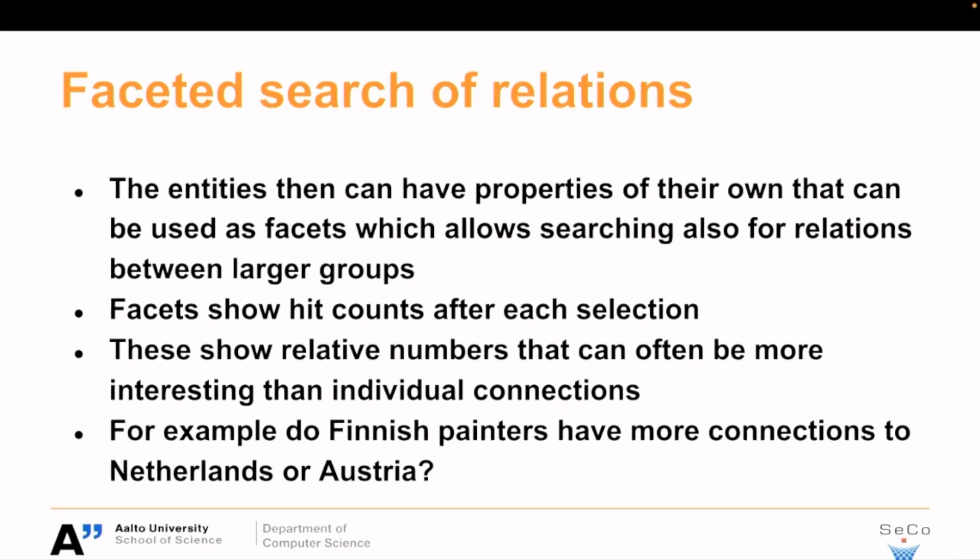Because the entities — like the two persons — can have properties like occupation, country of origin, birthplace, and gender, this allows us to search for relations between larger groups. For example, Finnish painters — selecting 'Finnish' from country of origin and 'painter' from occupation — and then comparing whether there are more connections for this kind of people from Netherlands or Austria. These relative numbers can often be more interesting than the individual connections.